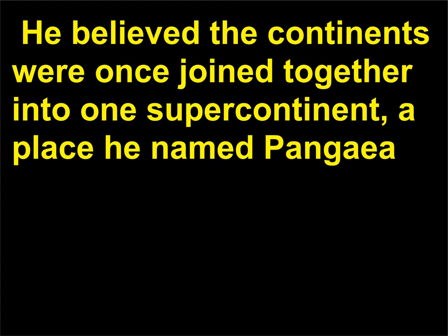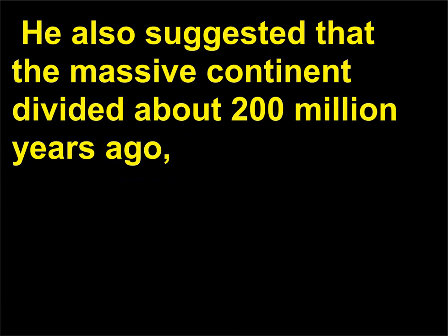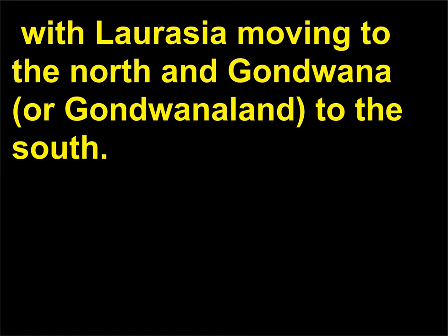Wegener believed the continents were once joined together into one supercontinent, a place he named Pangaea (also spelled Pangaea, meaning 'all land'), that was surrounded by a superocean called Panthalassa. He also suggested that the massive continent divided about 200 million years ago, with Laurasia moving to the north and Gondwana Land to the south.